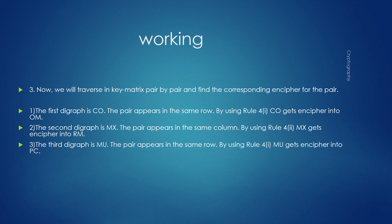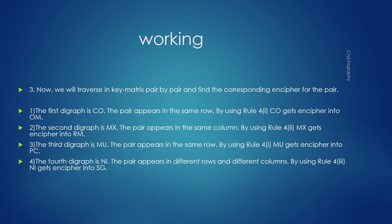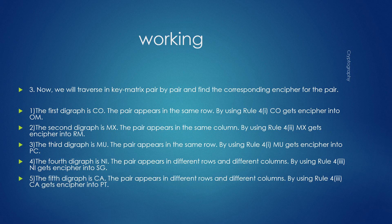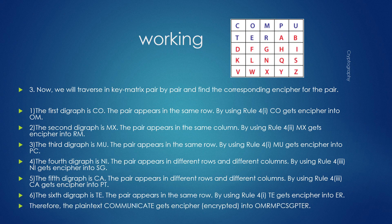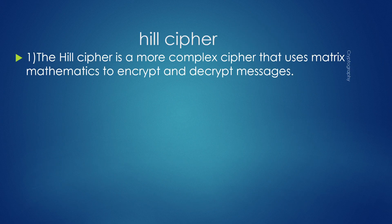Continuing the Playfair encryption: the digram MX appears in the same column and encrypts to RM; MU appears in the same row and encrypts to PC; NI appears in different rows and columns and encrypts to HG; CA appears in different rows and columns and encrypts to PT; and TE encrypts to ER using the same-row rule.